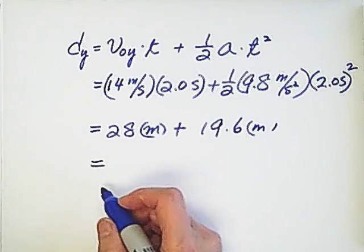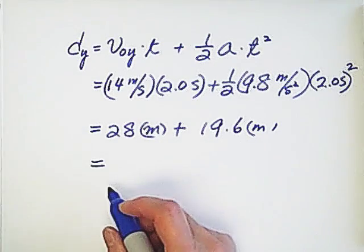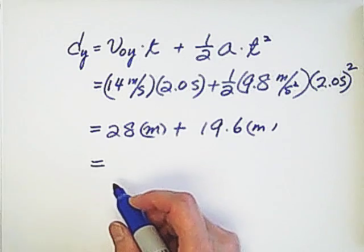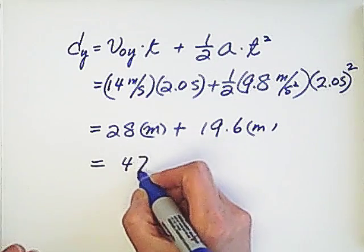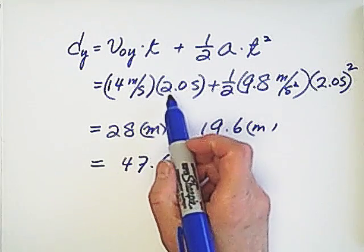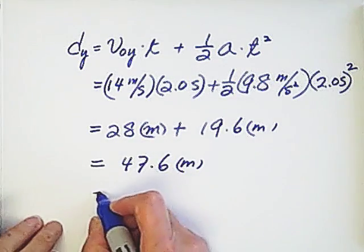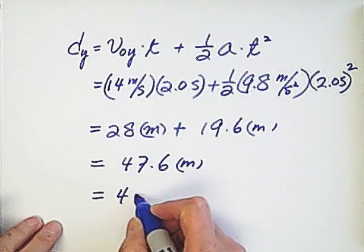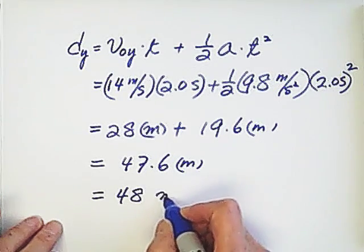The total add together. 19.6 plus 28. We got 47.6 meters. But the question give us 2 significant digits. So we just round to 48 meters.